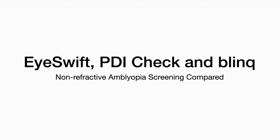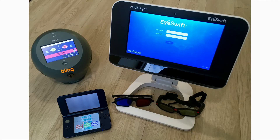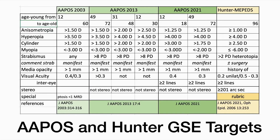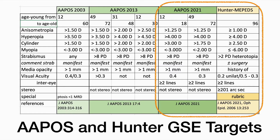Comparative evaluation of non-refractive screeners iSwift, PDI Check, and Blink. We will look at the Blink birefringent screener, PDI Check auto stereoscopic screener, and the eye tracking with iSwift. We will gauge these against recent 2021 validation guidelines including APOS and the one described by David Hunter.